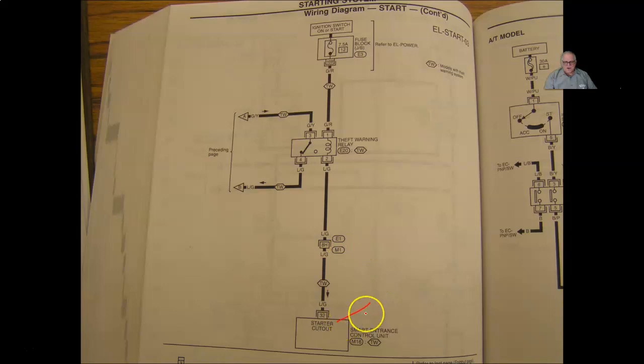It's going to prevent the vehicle from starting, as if this smart interns control unit, which is Nissan's theft deterrent control module, if it thinks that the car's been broke into, it's not the right key, or whatever method they're using to determine that, we're going to ground the circuit, which is going to energize this relay. Open that circuit, and the car's not going to start.